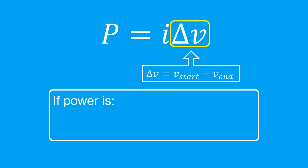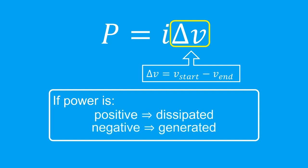So by following this convention, positive power means power being dissipated. Negative power means power is being generated.